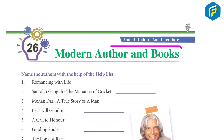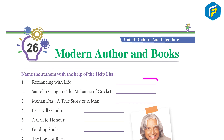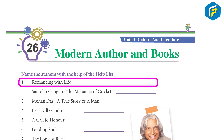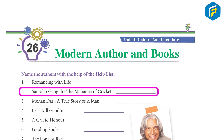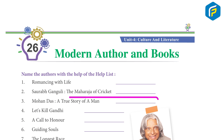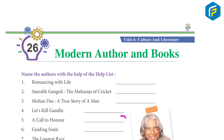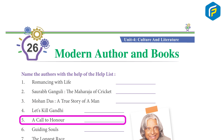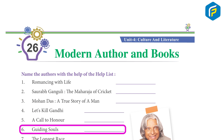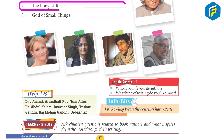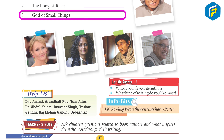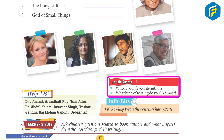Chapter 26: Modern Authors and Books. Name the authors with the help of the following: one, 'Romantic with Life' - Devanand; two, 'Saurabh Ganguly: The Maharaja of Cricket' - Debashish; three, 'Mohandas: A True Story of a Man' - Raj Mohan Gandhi; four, 'Let's Kill Gandhi' - Tushar Gandhi; five, 'A Call to Honor' - Jaswant Singh; six, 'Guiding Souls' - Dr. Abdul Kalam; seven, 'The Longest Race' - Iris; eight, 'God of Small Things' - Arundhati Roy.